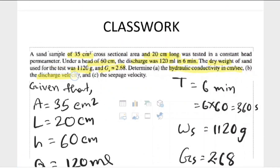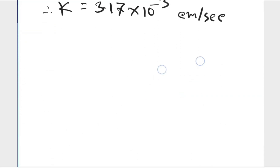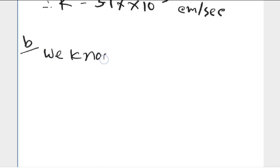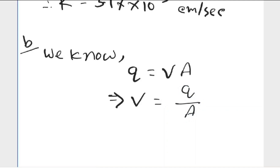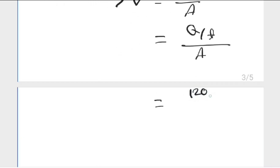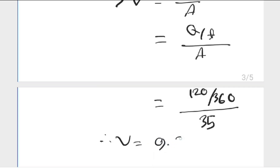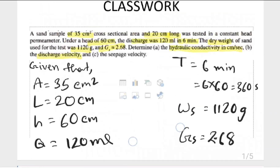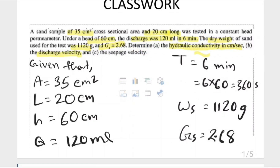The next question is to find discharge velocity. We know flow rate equals discharge velocity into area, so velocity equals flow rate over area, and flow rate equals discharge over t divided by area. Therefore, discharge velocity equals 9.5 into 10 inverse 3 centimeter per second.